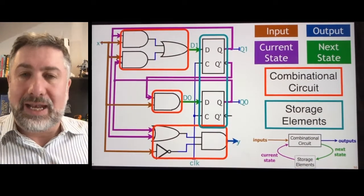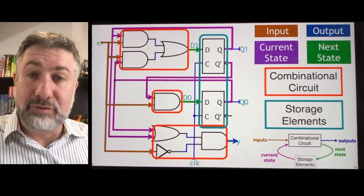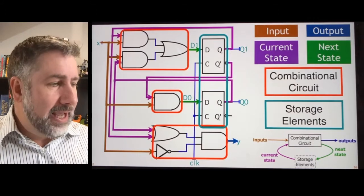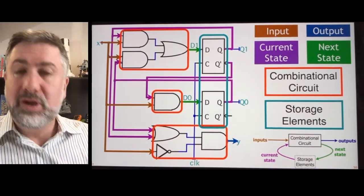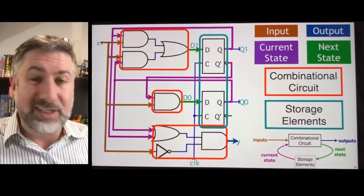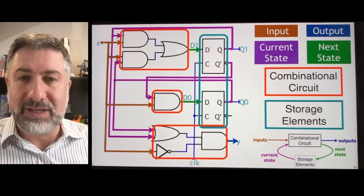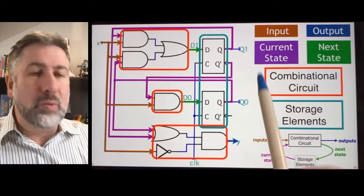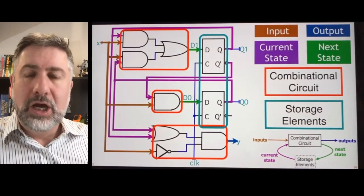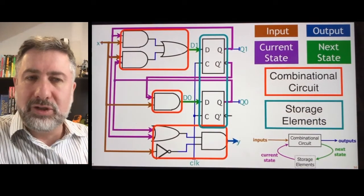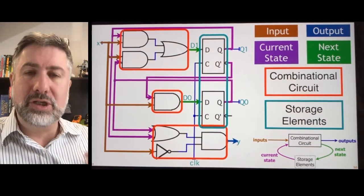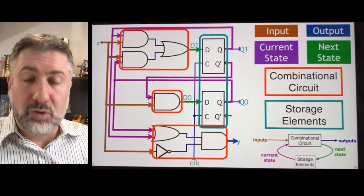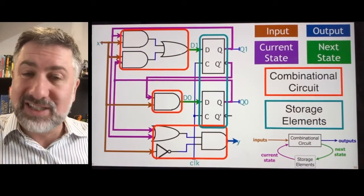In the end, when you build one of these things from scratch, the actual construction amounts to solving a combinational circuit problem, which we already know how to do — it's just the K-map work we've done from the beginning of class. What makes it challenging is using our knowledge of sequential storage elements to decide what the combinational logic should produce: the values that will cause the flip-flops to store the new state we want.